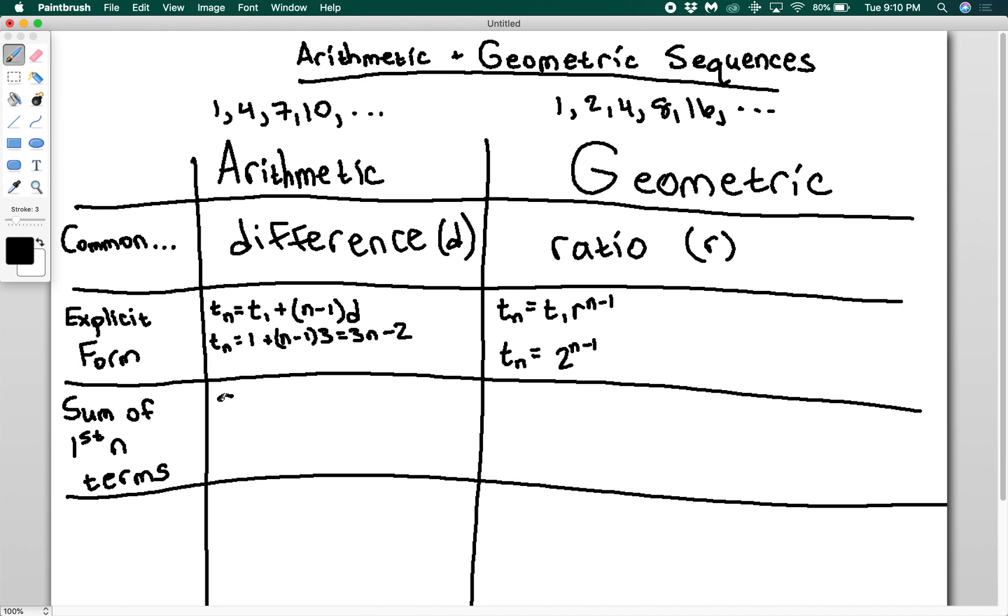So the sum for an arithmetic sequence is Sn, so the sum of the first n terms is n over 2 times the first term plus the nth term.